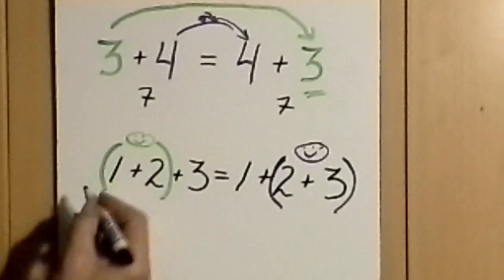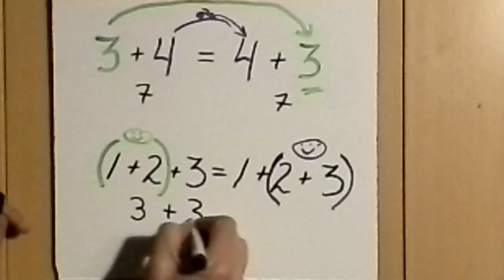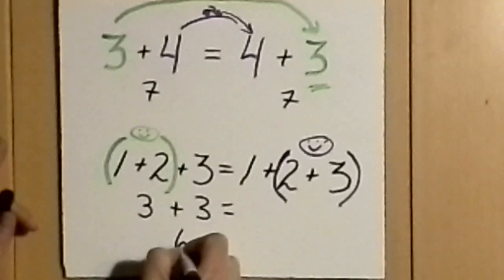In the first case, we see that 1 plus 2 is 3, plus the 3 we already had. 3 plus 3 is 6.